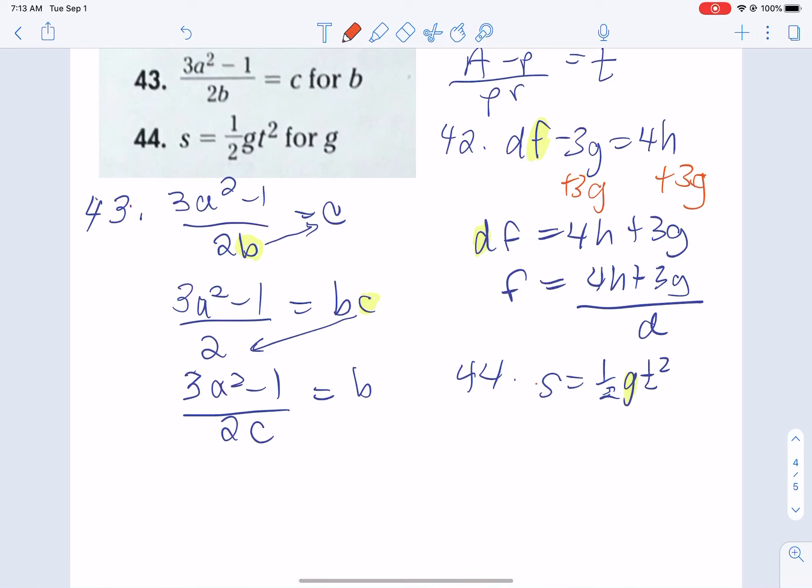So let's multiply both sides here by 2 so that the 1 half can cancel out. And so we get 2S equals GT squared. Now remember, we're solving for G. We only have to divide off that T squared.